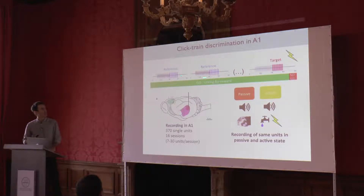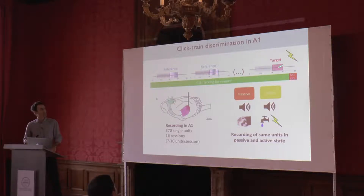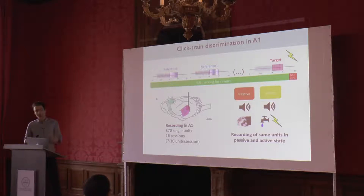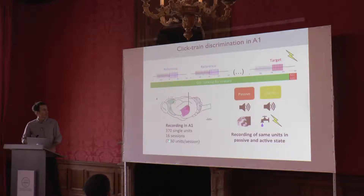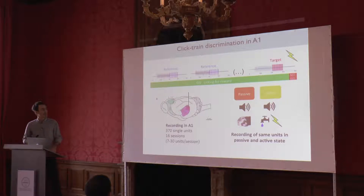If the click train was slow, the animal didn't need to do anything — it could just keep licking as long as it hears the reference sound. But when there's a fast click train, it has to stop licking, otherwise it gets a punishment — in this case, a mild electrical shock. The animals are highly trained to do this task and are pretty good at it; it's not a very challenging task. Activity is recorded in A1 during the behavior — about 370 single units with 7 to 30 units per session. As I said, activity is recorded in two different sessions: an active session in which the animal discriminates the click train, and a passive session in which the animal is exposed to the same stimuli but does not need to do anything.